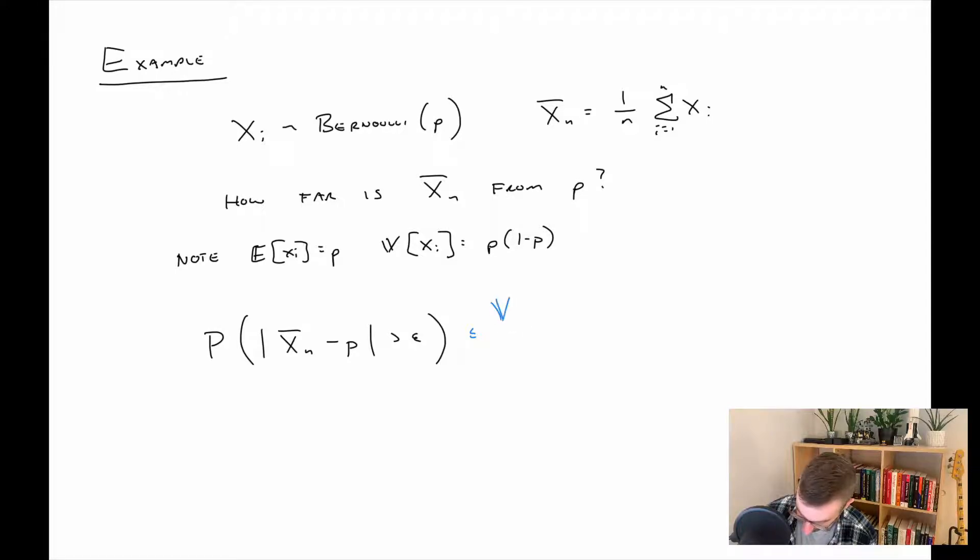So this is less than or equal to the variance of x bar divided by epsilon squared. And that is p times 1 minus p over n. That's the variance of x bar. And then we have that epsilon squared still. We can actually, so that was using Chebyshev's, we can actually provide an upper bound on this quantity now, which is less than or equal to 1 over 4n epsilon squared. And this is because, if you look at p times 1 minus p, this is bounded above by 1 fourth.